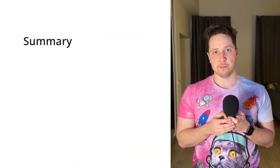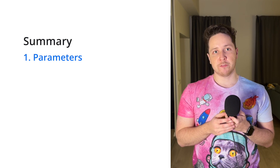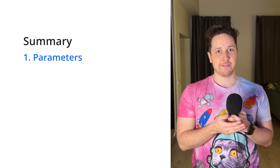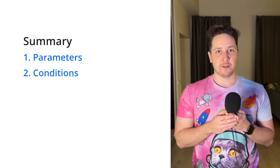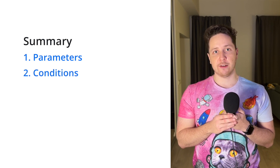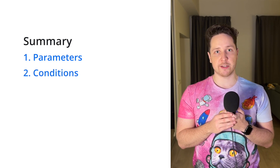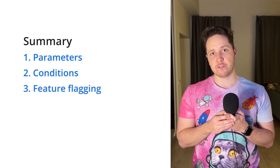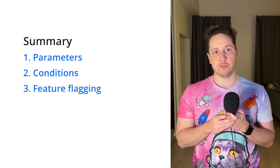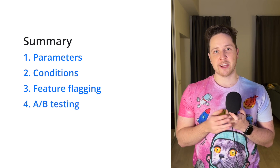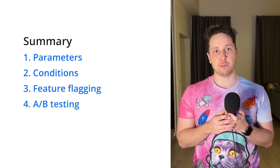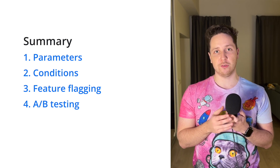Let's recap what we learned in this video. You can use Firebase Remote Config to provide different values to your app and later change them on the fly. Use conditions to provide different configuration values for your users based on specific criteria. Use Firebase Remote Config for feature flagging and gradual rollouts of new features. And do not forget to use A/B tests to validate your assumptions and provide the best possible experience for your users.